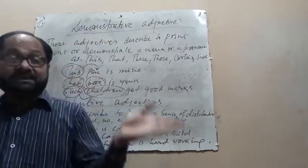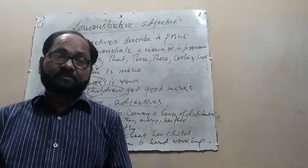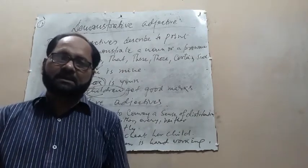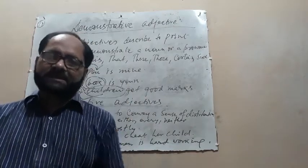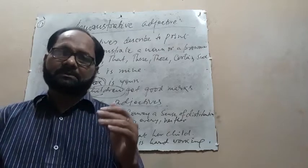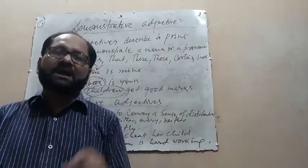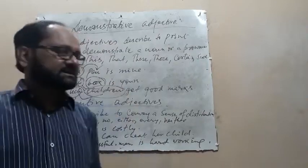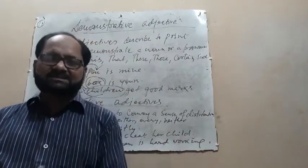I hope you will understand what a demonstrative adjective is. You have to read your grammar book carefully or listen to this lecture carefully. Demonstrative adjectives are those adjectives which demonstrate or point out a noun or a pronoun. Examples are: this, that, these, those, such, certain.